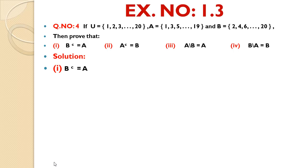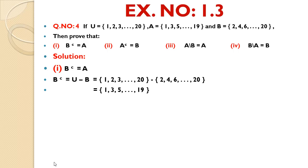Solution of first part — B complement = A: B complement = U - B. We write U's elements, difference sign, then set B's elements. Universal Set U contains all elements from 1 to 20, while set B contains even numbers from 2 to 20. So U - B gives 1, 3, 5, ..., 19, which equals set A. Hence proved.